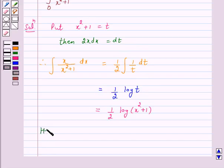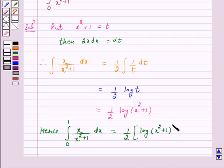Now, hence, integral from 0 to 1, x upon x square plus 1 dx is equal to... So, this is equal to 1 by 2 log of x square plus 1 from 0 to 1.